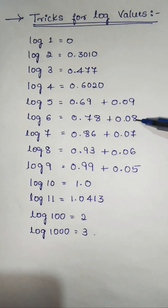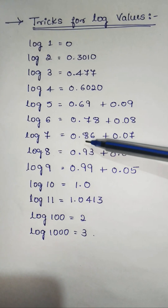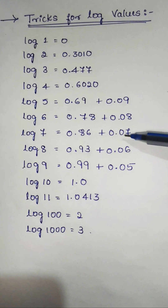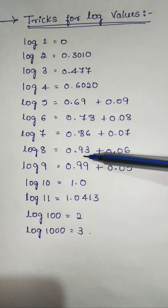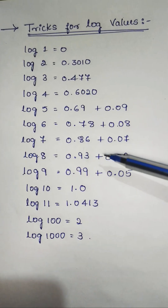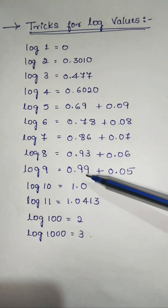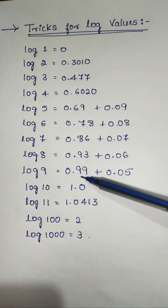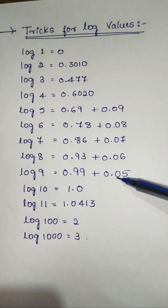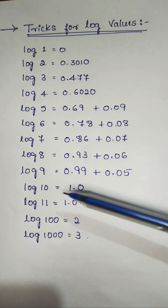To this you have to add 0.08, then you will get the answer 0.86 — that is the value of log 7. To this add 0.07, then you get 0.93, the value of log 8. Then add 0.06 to get the value of log 9. Then add 0.05 and you will get the answer 1, which is the value of log 10.